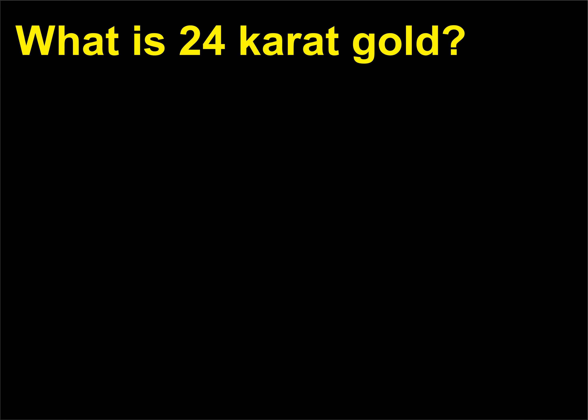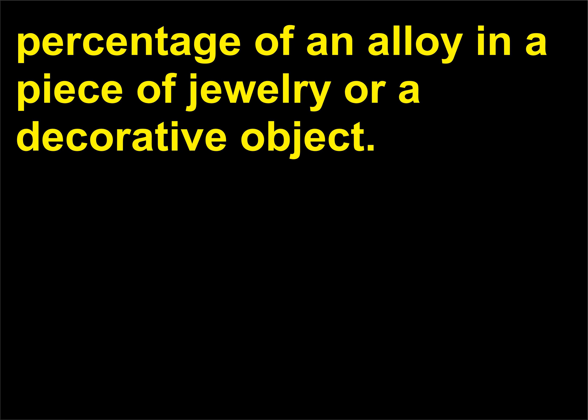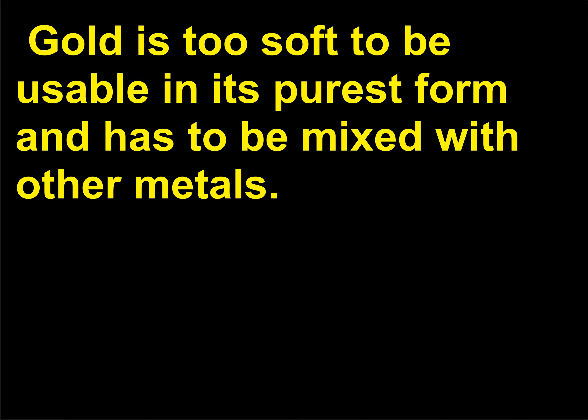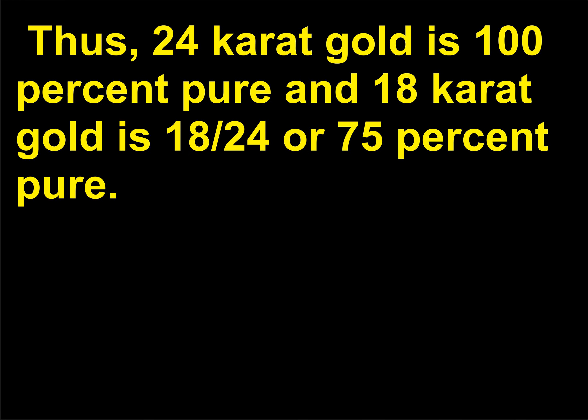What is 24 carat gold? The term carat refers to the percentage of gold versus the percentage of an alloy in a piece of jewelry or a decorative object. Gold is too soft to be usable in its purest form and has to be mixed with other metals. 1 carat is equal to 1/24th part fine gold. Thus, 24 carat gold is 100% pure and 18 carat gold is 18/24ths or 75% pure.